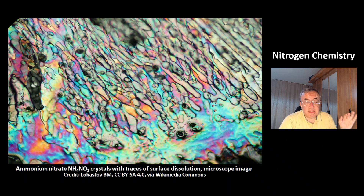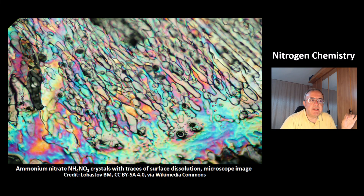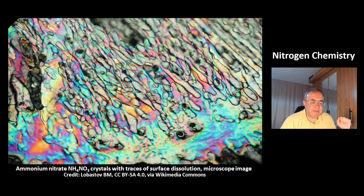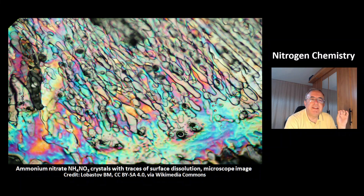This is a picture of ammonium nitrate, NH₄NO₃, crystals with traces of surface dissolution — this image is a microscope image. And that was today's video about the chemistry of the element nitrogen. Thank you for watching. Have a nice day. Bye bye.